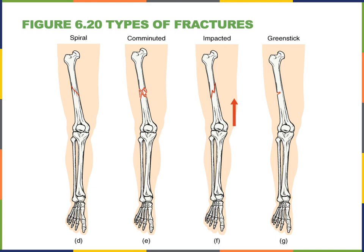A spiral fracture occurs when bone segments are pulled apart as a result of a twisting motion. A comminuted fracture is when several fragments are formed from one bone that breaks into numerous small pieces.